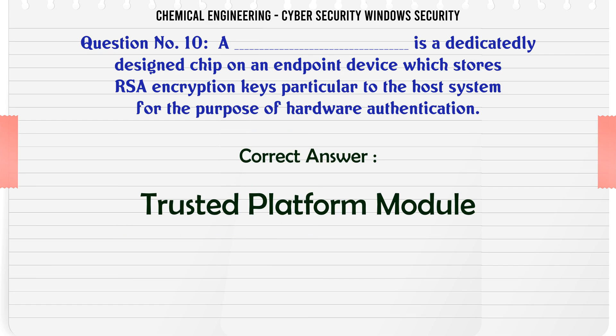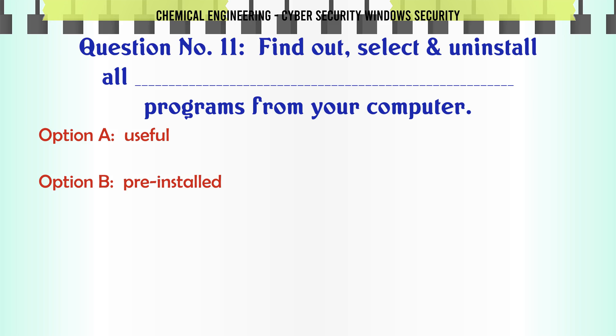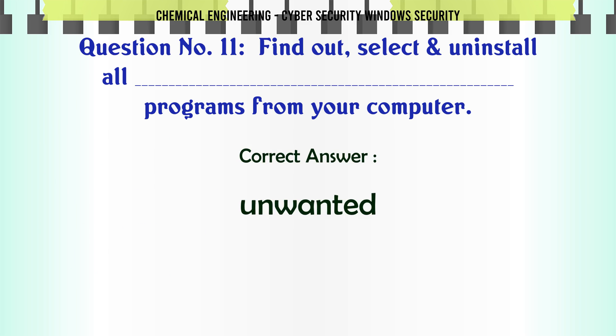Find out and uninstall all programs from your computer. A. Useful, B. Pre-Installed, C. Unwanted, D. Utility. The correct answer is Unwanted.